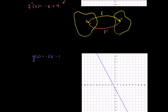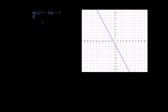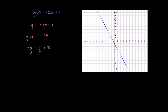Let's do one more of these. Here I have g of x is equal to negative 2x minus 1. Just like the last problem, I like to set y equal to this. So we say y is equal to g of x, which is equal to negative 2x minus 1. Now we just solve for x. y plus 1 is equal to negative 2x — just added 1 to both sides. Now we can divide both sides by negative 2. So you get negative y over 2 minus 1 half is equal to x.